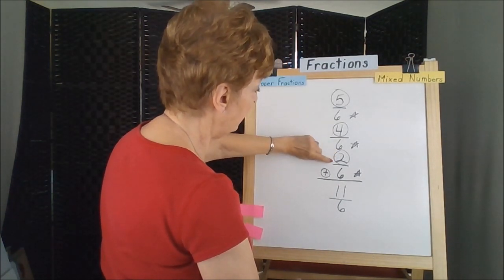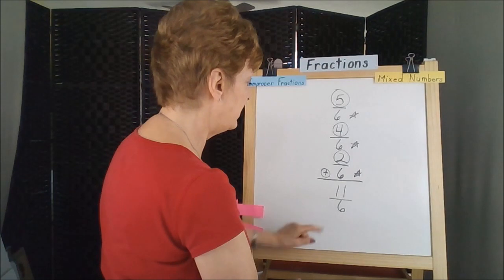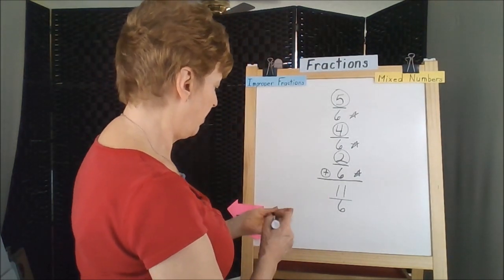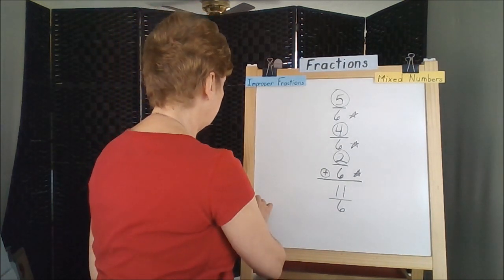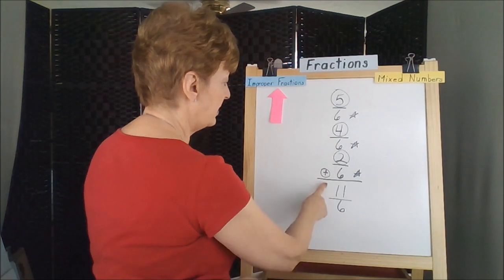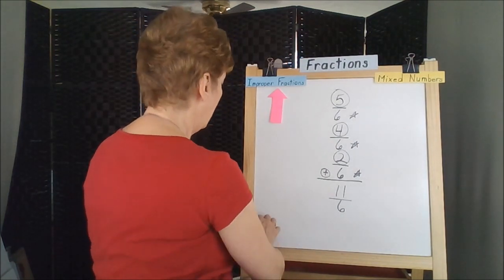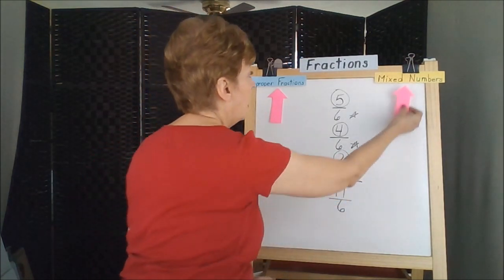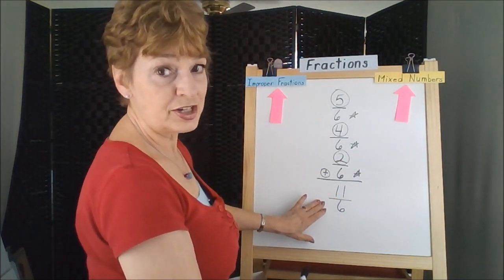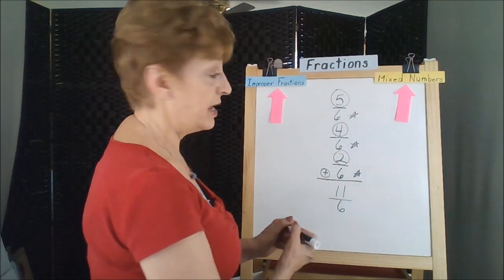We could have nine and then take one from here would make it ten and one more is eleven. Eleven sixths. This is a top heavy fraction, this is an improper fraction. Our improper fraction is eleven sixths. We need to have a mixed number, we need to change this into an equivalent fraction that is more understandable.